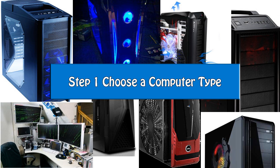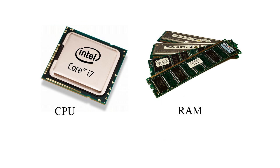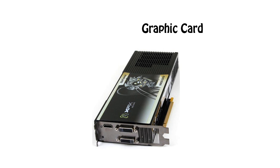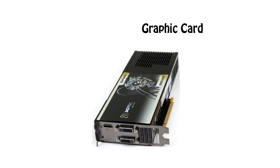The first step is a pretty easy one: get a general idea of the type of computer you want to build and how much you're willing to spend. For example, if you're building a computer for video and art editing, invest more in the processor and RAM than the graphics card. If the computer will be used for graphic-intensive gaming, a graphics card would be of much higher priority.